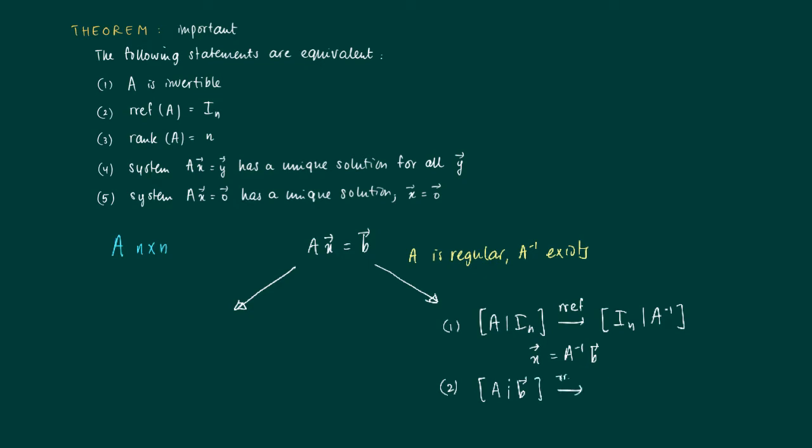Also, we may find x by considering the augmented matrix and finding the reduced row echelon form, which will be the identity matrix with x.